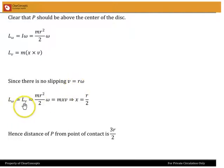Equating the two in terms of magnitude. M r squared by 2 omega is equal to m x v. And you can solve and see that x is equal to r by 2. And therefore the distance of point P from the point of contact will be 3r by 2.